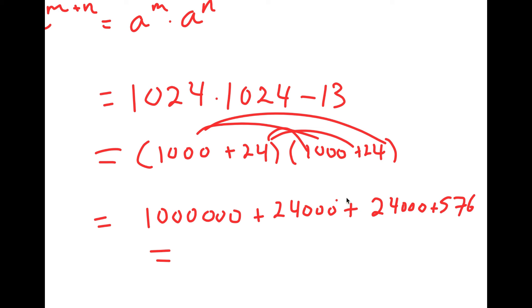Now 24,000 plus 24,000 is 48,000. So I get 1,048,576.